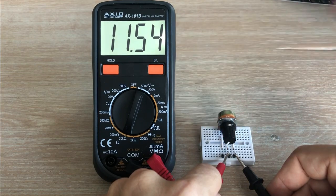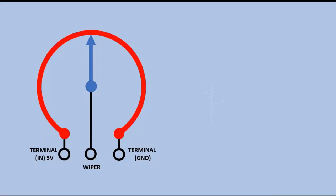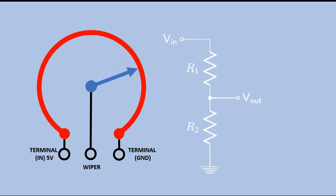Now let's see how we can use the pot as a voltage divider. Here is a voltage divider circuit. When we turn a wiper to any position, the resistive material on the left of the wiper corresponds to R1 resistor in that circuit and the resistive material to the right corresponds to R2 resistor.